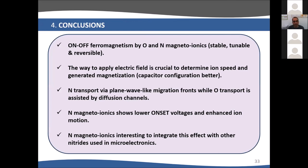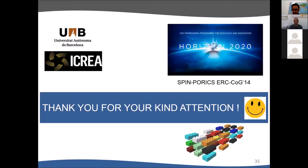In conclusion, I've shown you can induce on-off ferromagnetism using both oxygen and nitrogen magneto-ionics, and the effect is stable, tunable, and reversible. It is important how you apply the electric field to determine the speed of ion migration and the generated magnetization. The capacitor configuration works better. Interestingly, nitrogen transport seems to be more like a planar front instead of inhomogeneous or grain boundary-mediated diffusion. Nitrogen magneto-ionics shows lower onset voltages. We believe it's interesting to integrate this with other nitrides commonly used in microelectronics. With this, I would like to thank you very much for your kind attention.